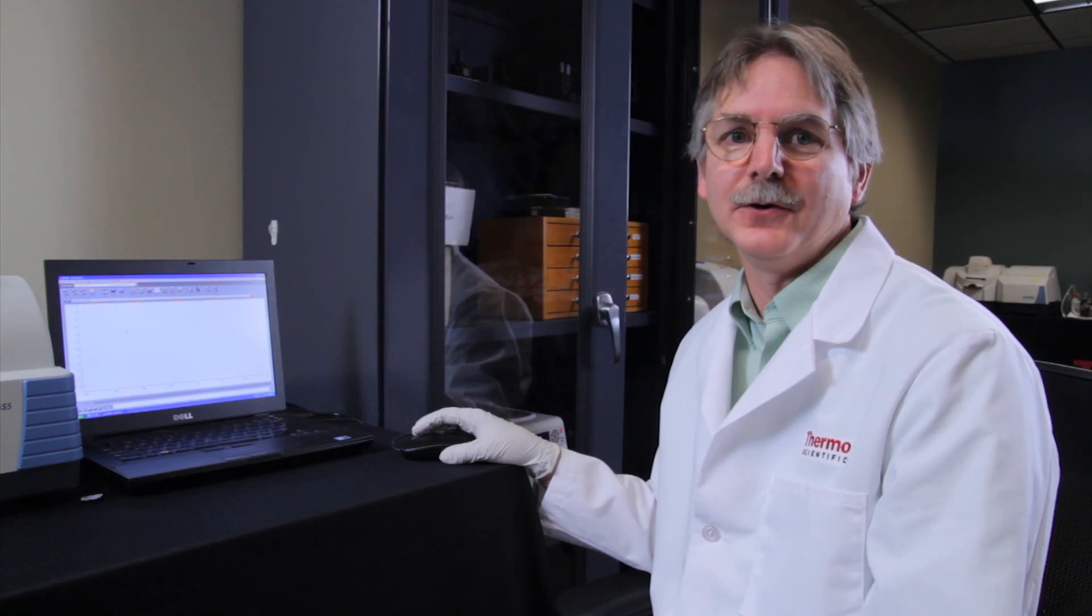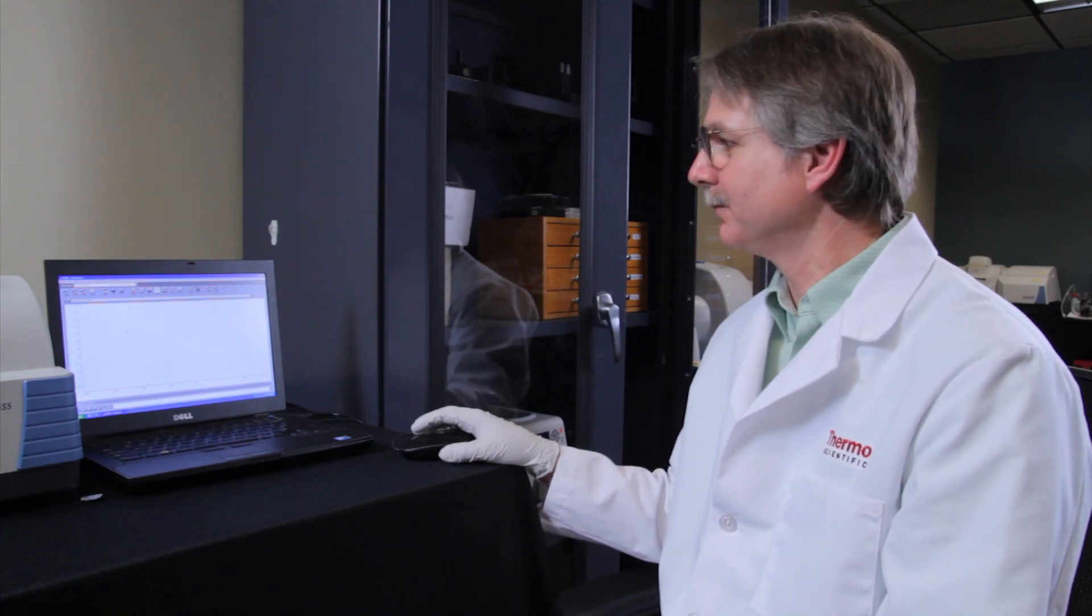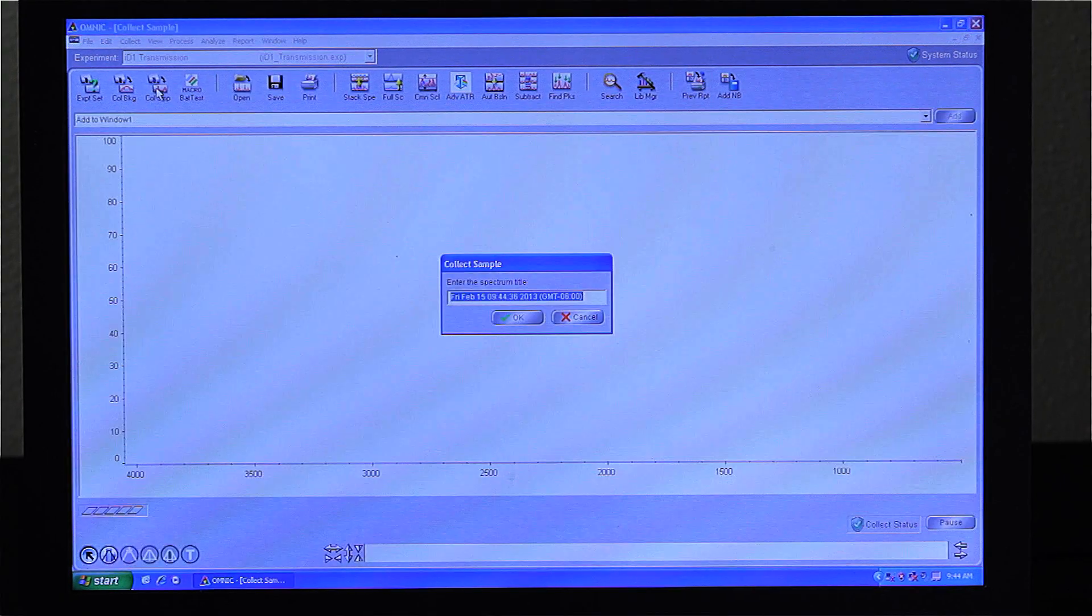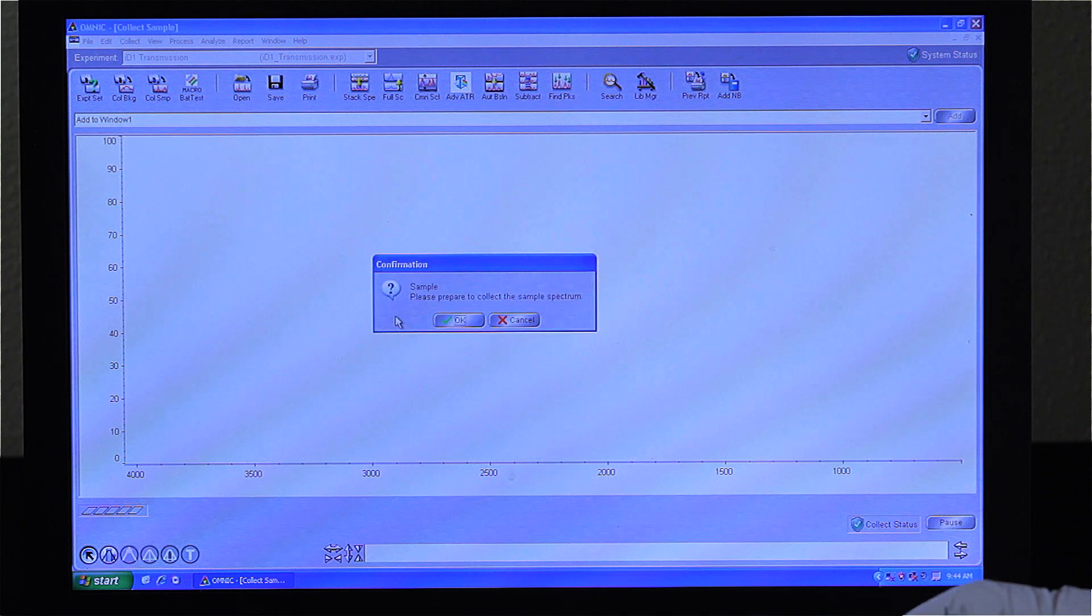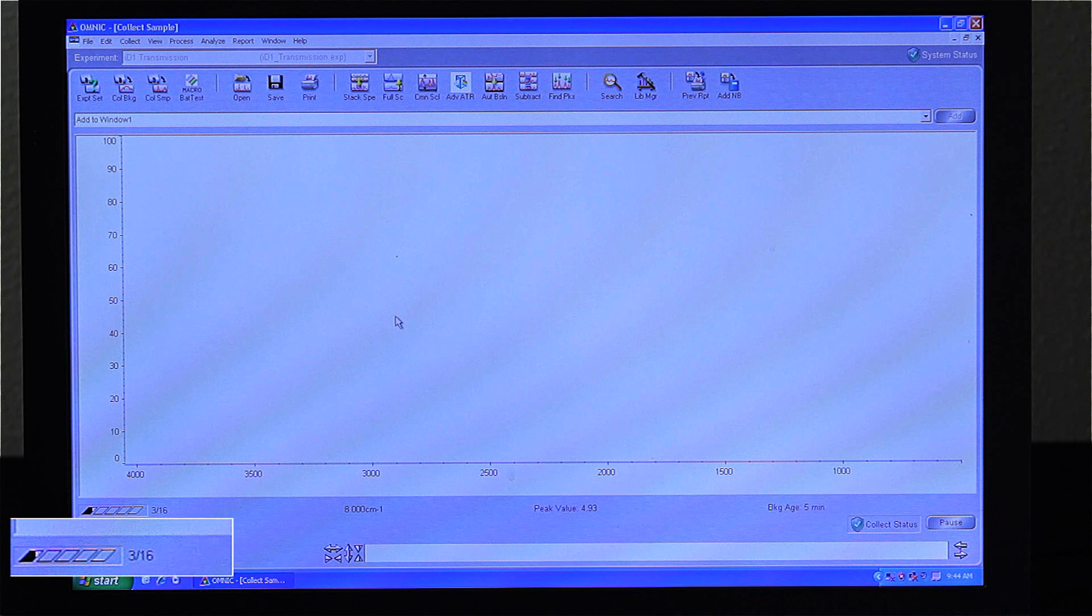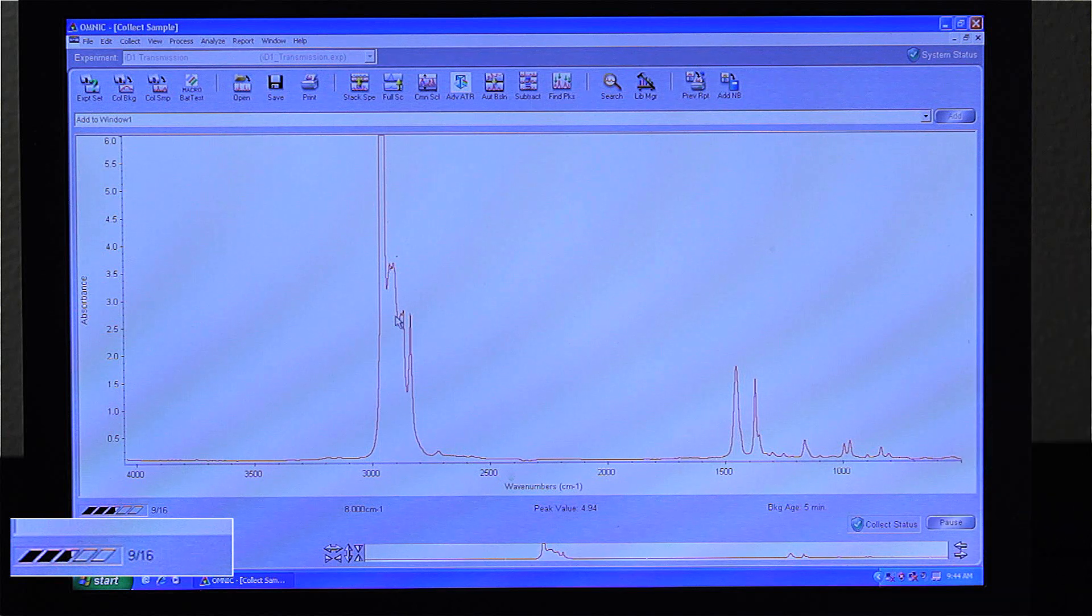With the film placed in the ID-1, the spectrum can be collected. We use our software called Omnic, where in just a few clicks, you can actually start collecting the infrared spectrum. Here you see the spectrum starting to come up. In a few seconds, it'll be ready for analysis with the library search.